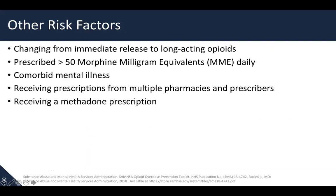Other risk factors include changing from immediate release to a long-acting opioid — for example, going from Percocet with oxycodone to OxyContin. Those prescribed more than 50 morphine milligram equivalents per day, someone with comorbid mental illness specifically depression, those receiving prescriptions from multiple pharmacies or prescribers, and those receiving a methadone prescription — because of its unusual kinetics, long half-life, and risk for accumulation and subsequent respiratory depression.